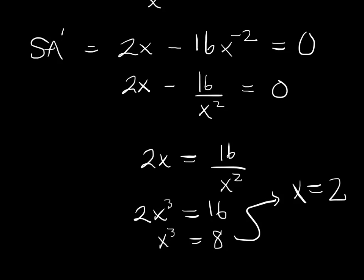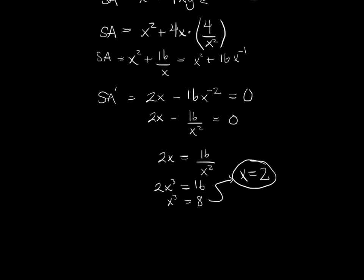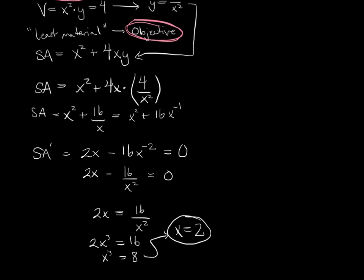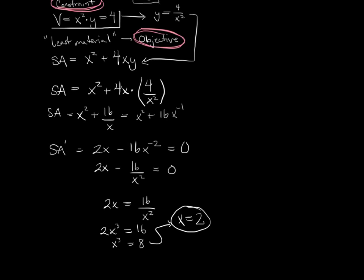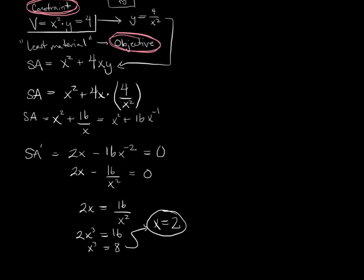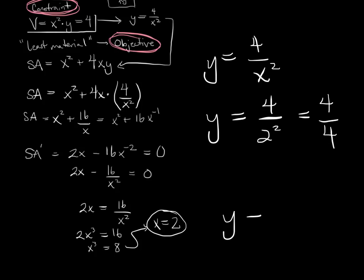Now, we're not quite done because the question asked us for dimensions. So, we have to take this answer, zoom out a bit, and use our volume equation all the way up here to figure out what y is. Or I could even, if I wanted to, I've solved for y. y is 4 over x squared. So, it's probably better. y is 4 over x squared. y is 4 over 2 squared. 4 over 4, most people call that 1. All right.